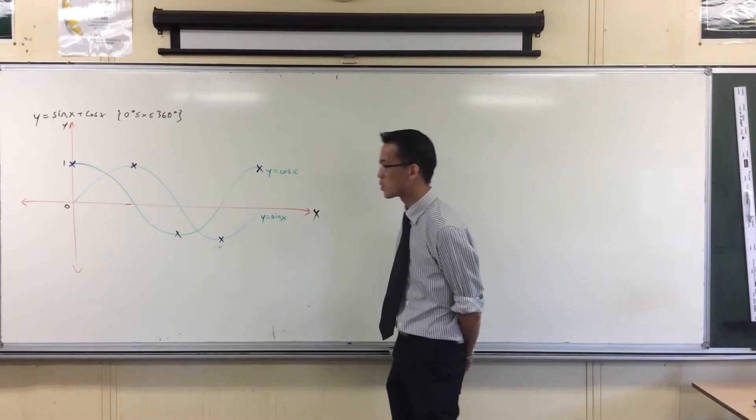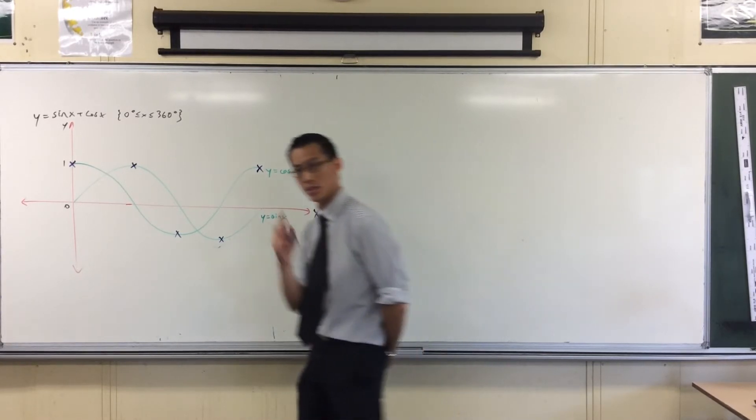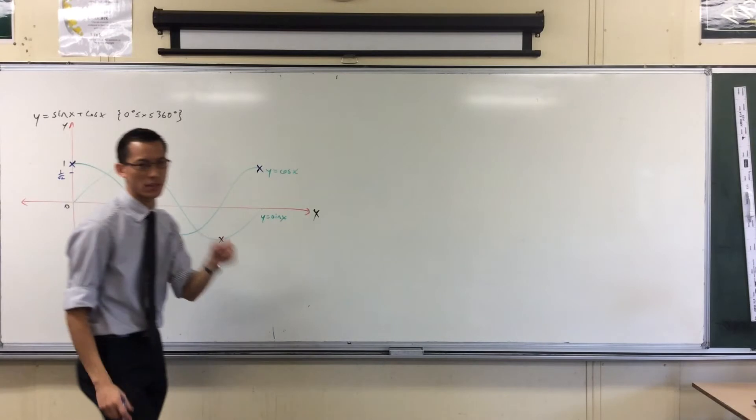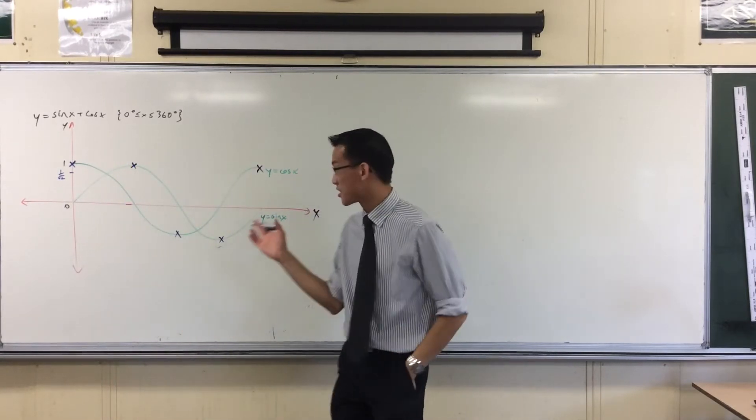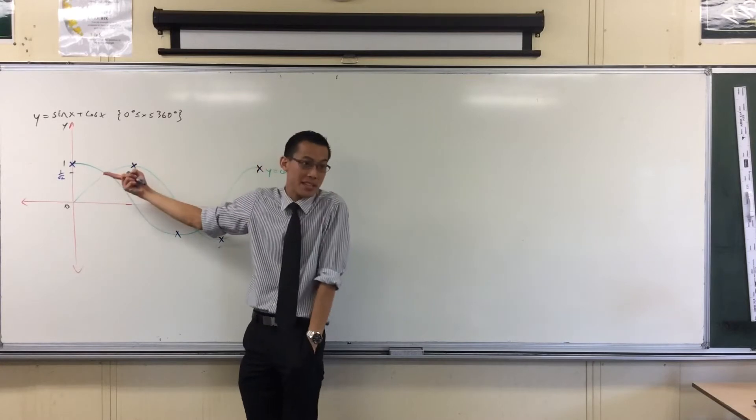For instance, the next most interesting points are the points of intersection. You can see there are two of them. The first one's easy. What is this point of intersection? It's 45 degrees because sine of 45 and cos of 45 are both equal to 1 over root 2. It's about 0.707. Now, I don't need to know all that much about it. Here, they're both the same.